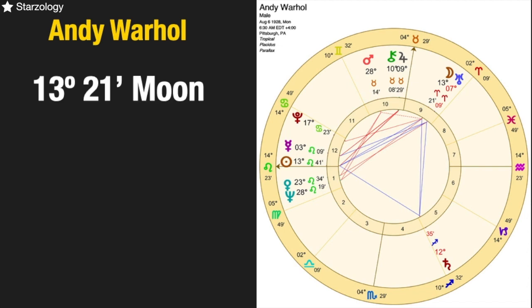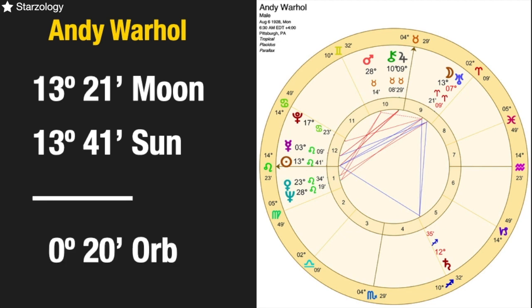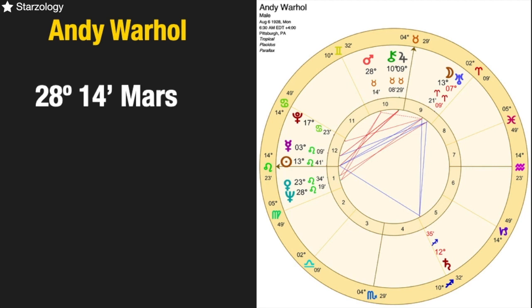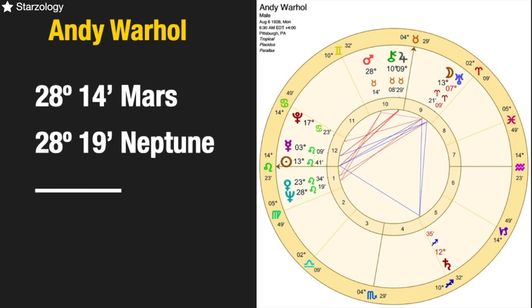The next pair is the Moon and the Sun. The Moon is at 13 degrees 21 Aries, and the Sun is at 13 degrees 41 Leo. The Sun and the Moon are actually trine, and the difference there is zero degrees 20 minutes. Then we have Mars at 28 degrees 14 Taurus and Neptune at 28 degrees 19 Leo. We take one from the other and get the difference — zero degrees five minutes of orb.